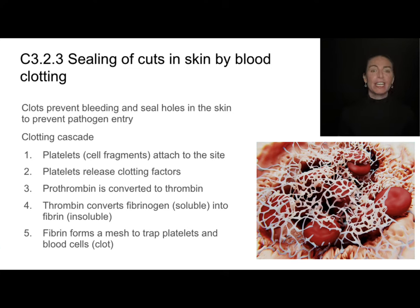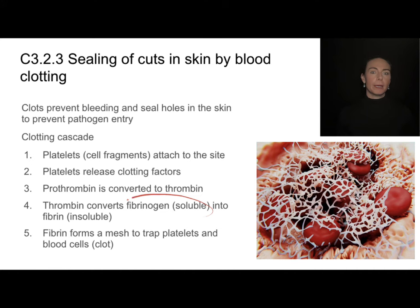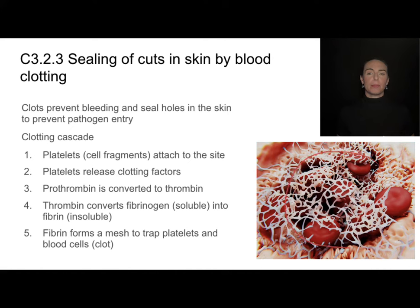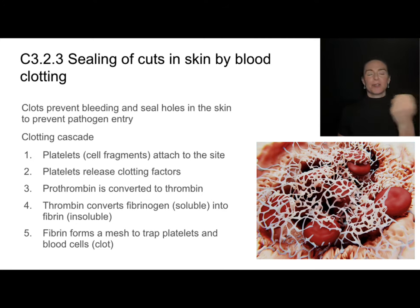Thrombin converts fibrinogen into fibrin. Fibrinogen is a soluble blood protein — it's floating dissolved in our blood plasma and is produced in our liver. When it comes into contact with thrombin, it's converted to fibrin, which is insoluble. So it comes out of solution and forms a mesh that traps blood cells and platelets floating by in the bloodstream. This trapped blood cell, platelet, and fibrin mesh is the clot — this is what forms a blood clot to seal holes in the skin.